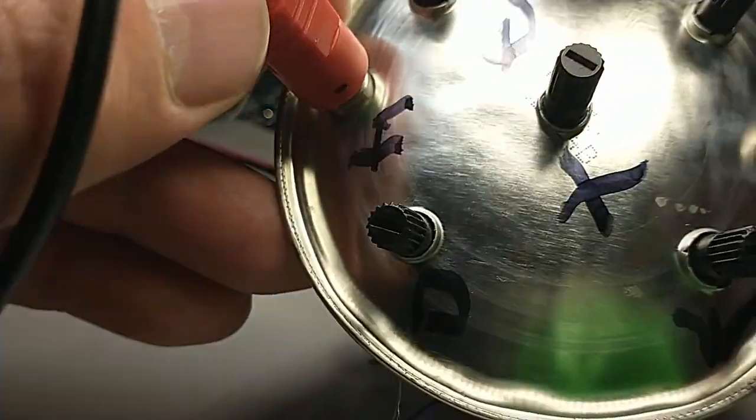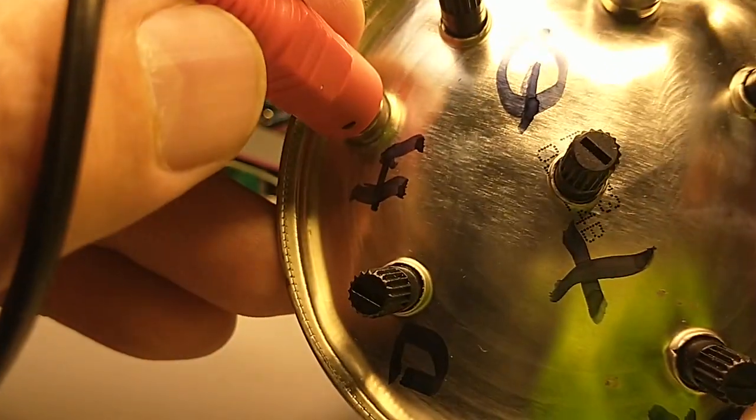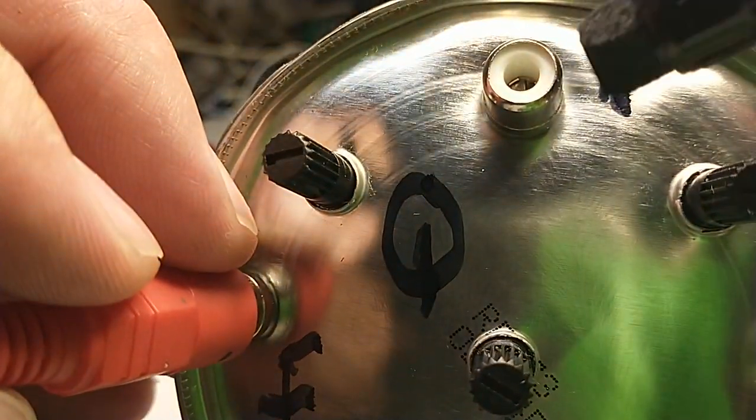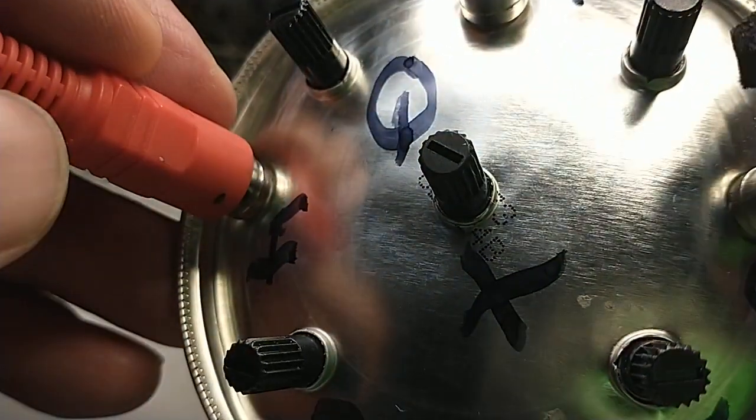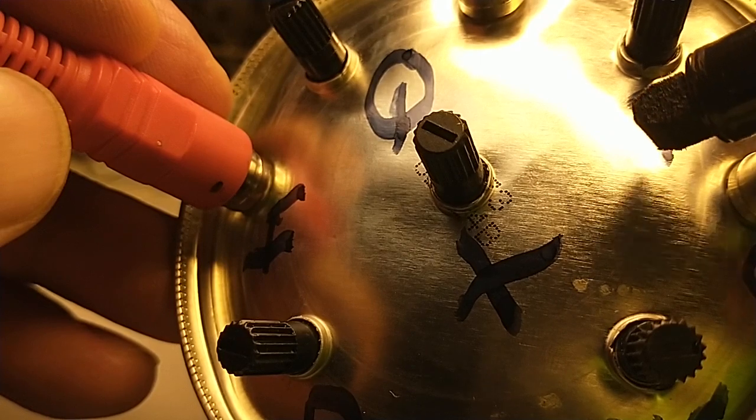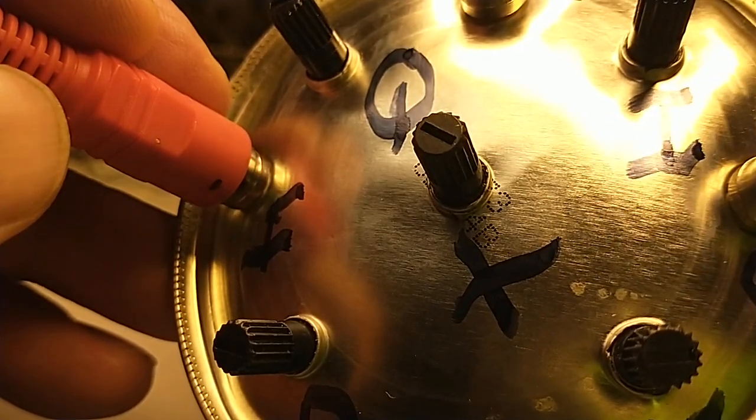And this right here, this is the cutoff CV right there. I'm not going to use that for this video, and this right here is something called the Inversion Knob.